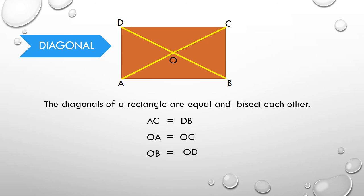Hence, the diagonals of a rectangle are equal and they bisect each other. That is, AC equals DB, and OA equals OC, and OB equals OD. Hence, this is the diagonal property of a rectangle.